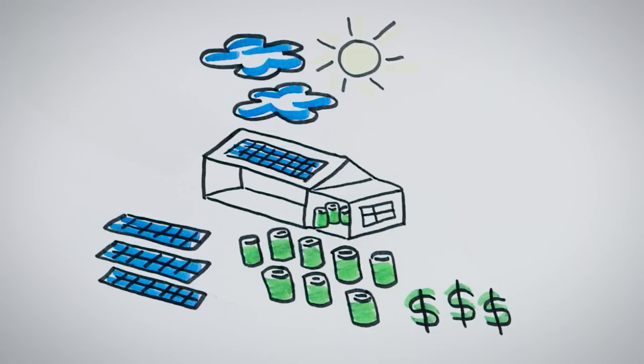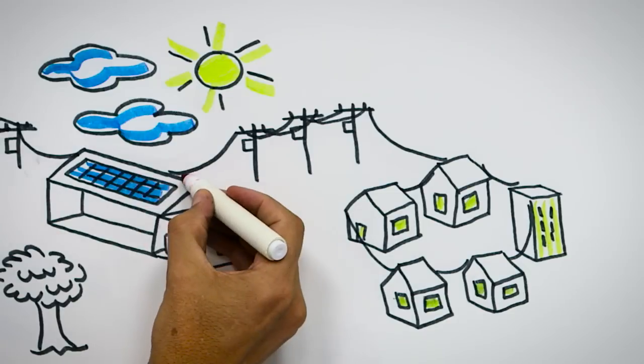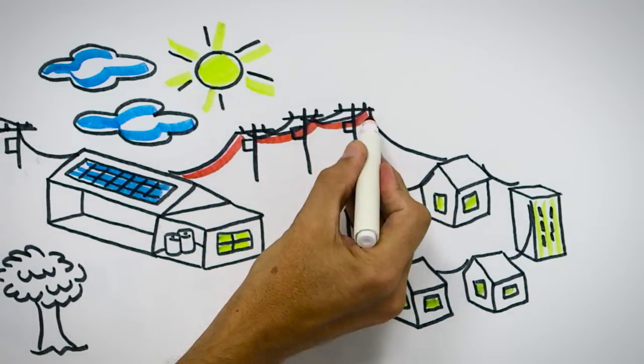And on days with lots of sun, the panels will produce more power than the batteries can store, wasting up to two-thirds of the generated power. But when you're connected to the grid's network of producers and consumers,